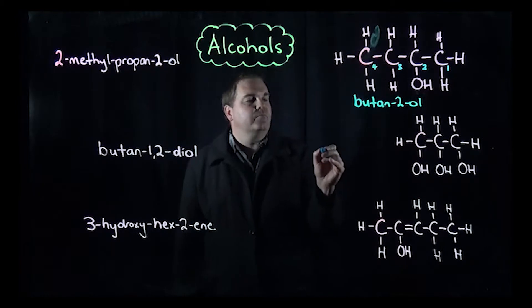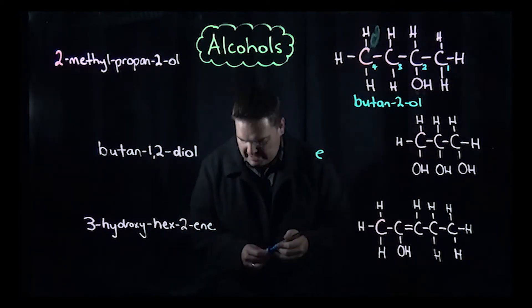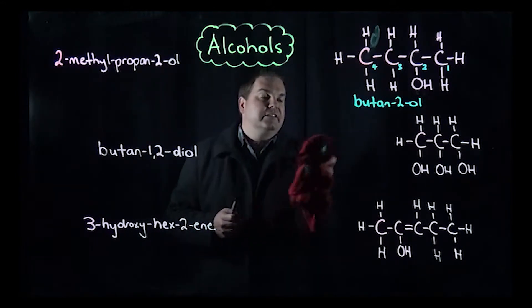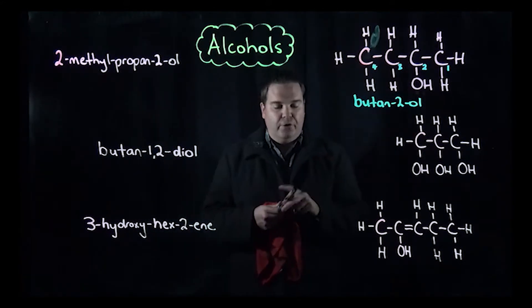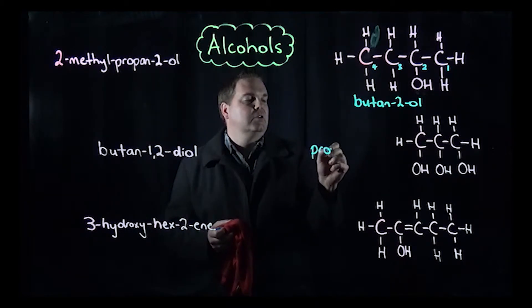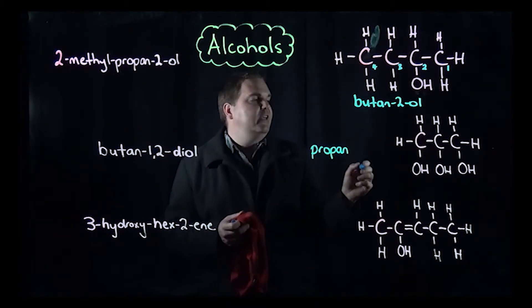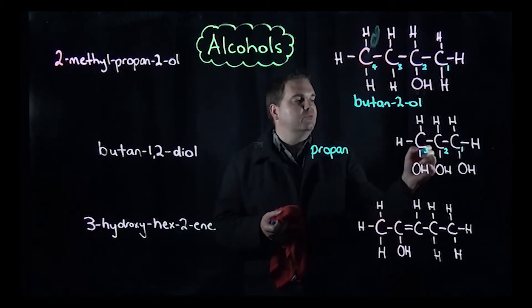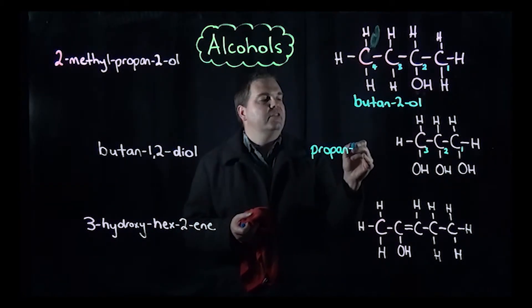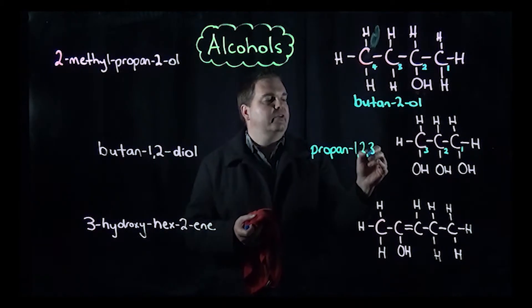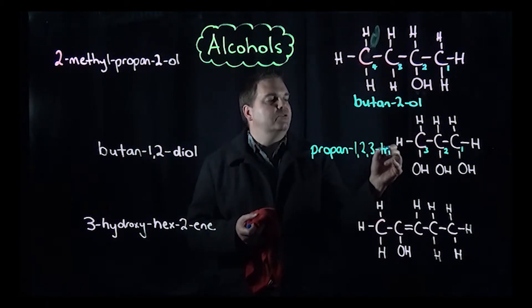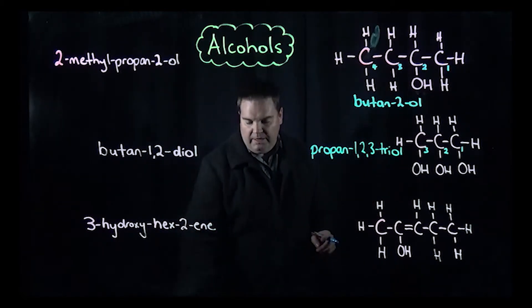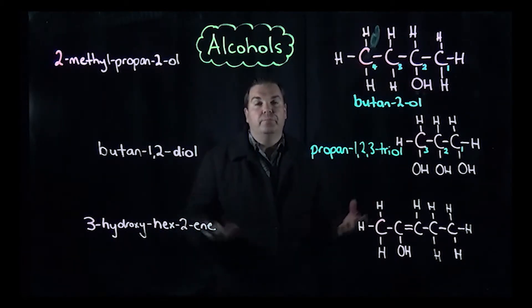This one here, we've got three carbon atoms, so it's propan. It doesn't matter which end we number from, one, two, three. We've got three alcohol groups on the one, two, and three carbon atoms, and because there's three of them we put tri in the front, so it's propan-1,2,3-triol.